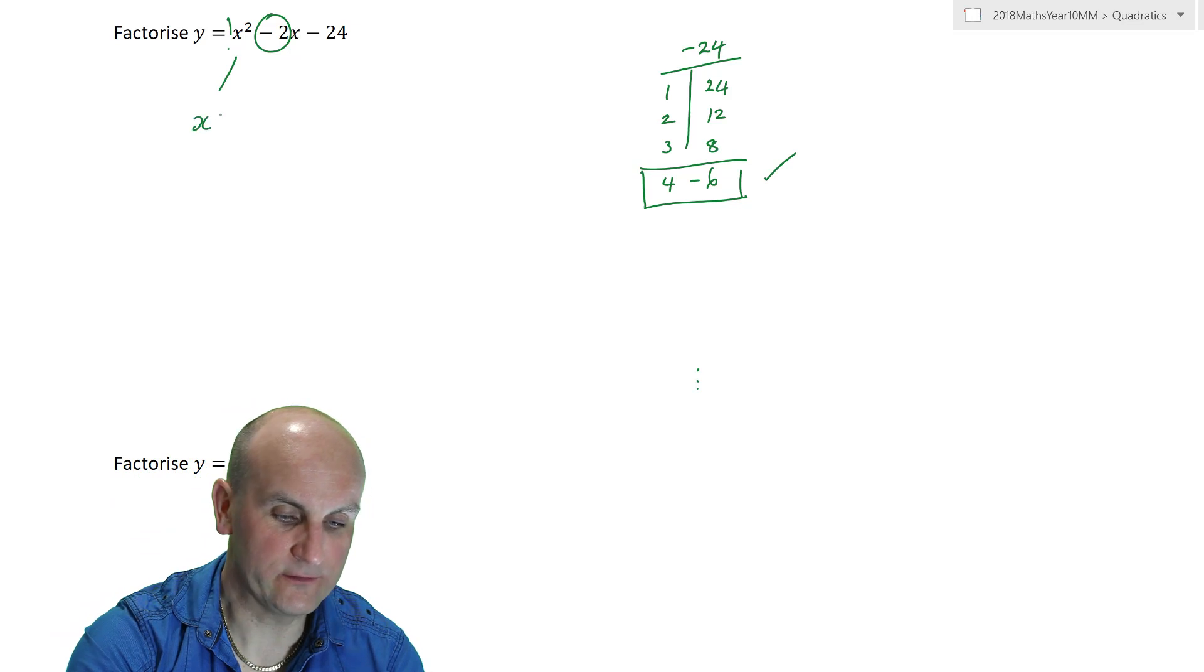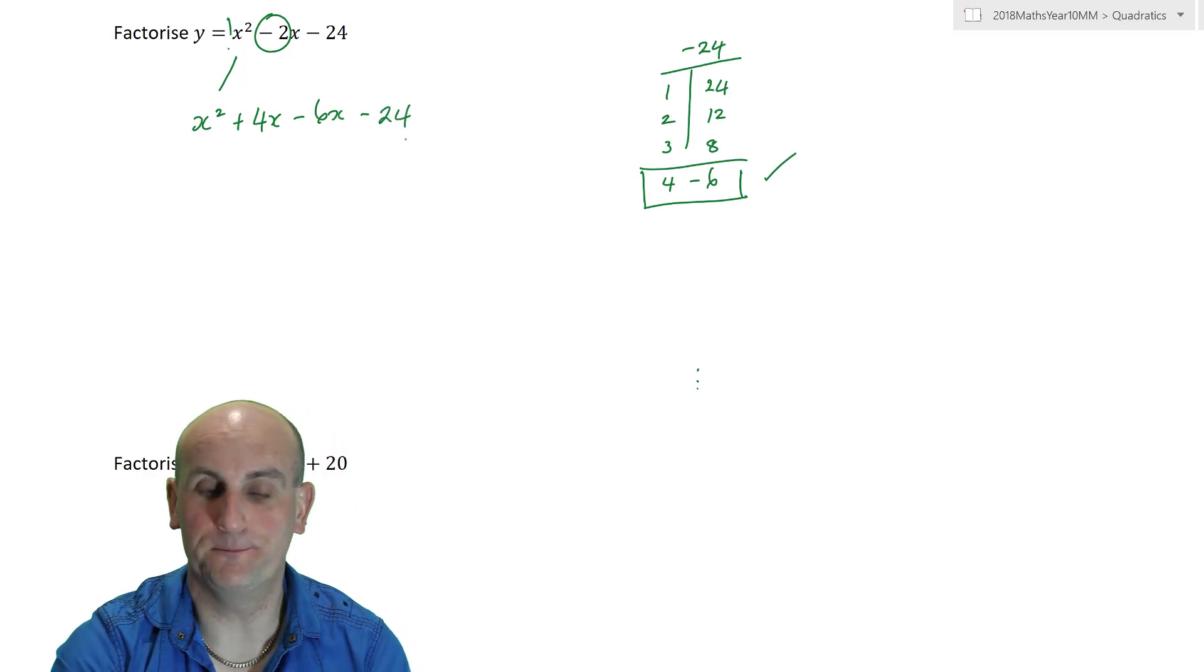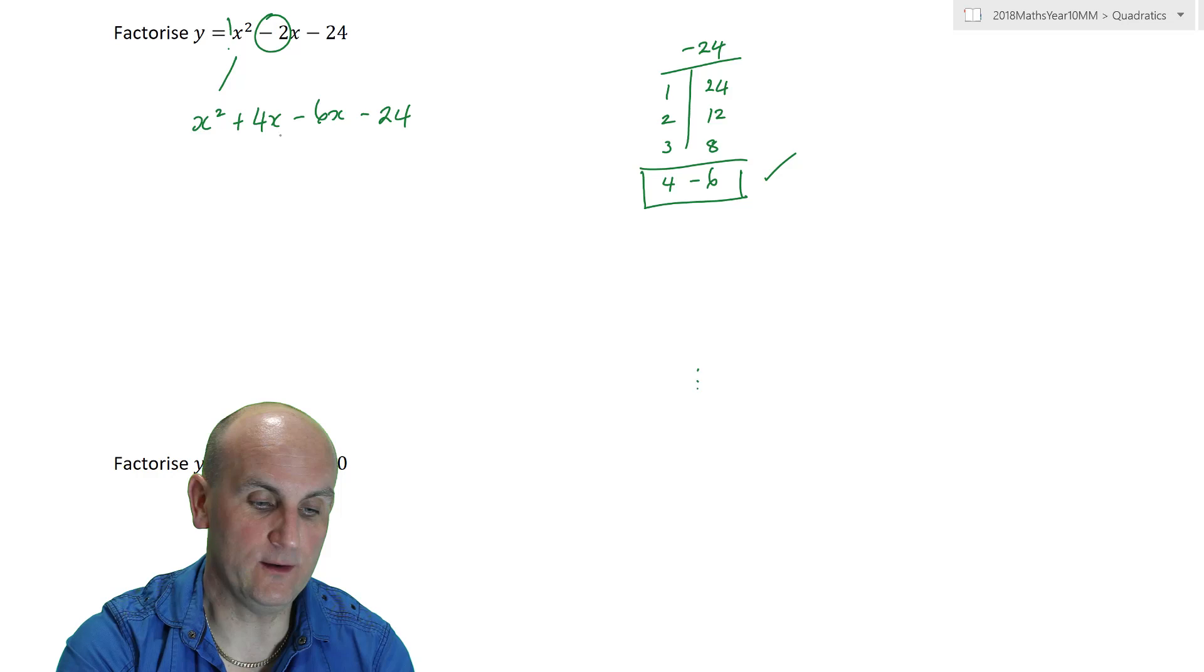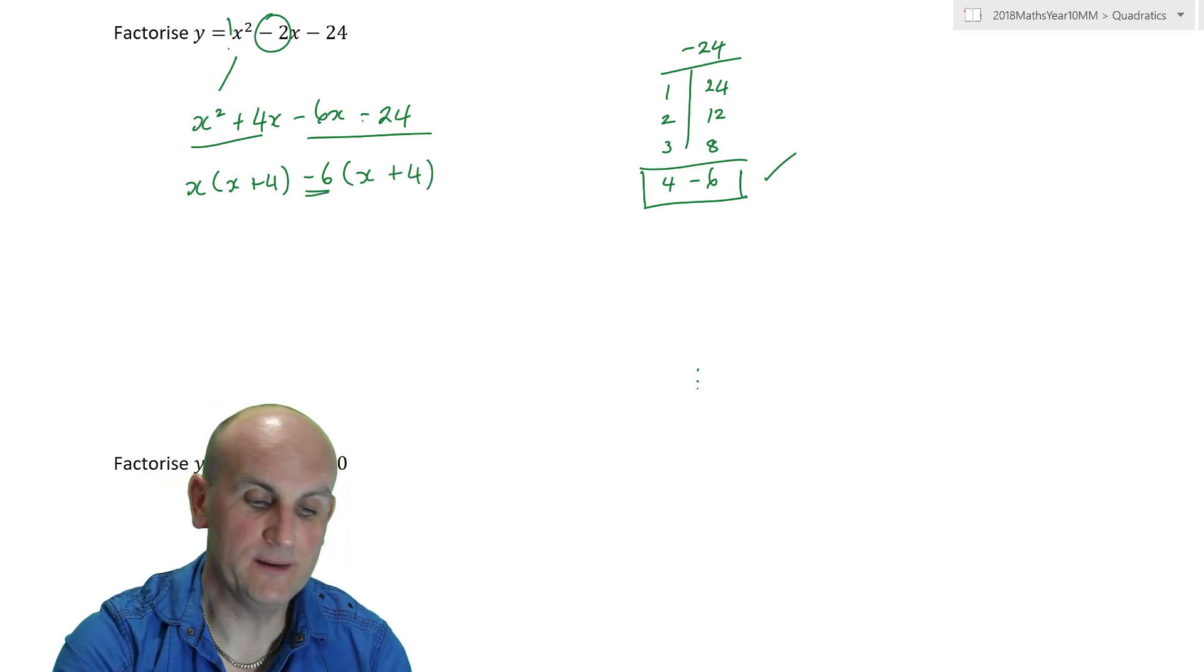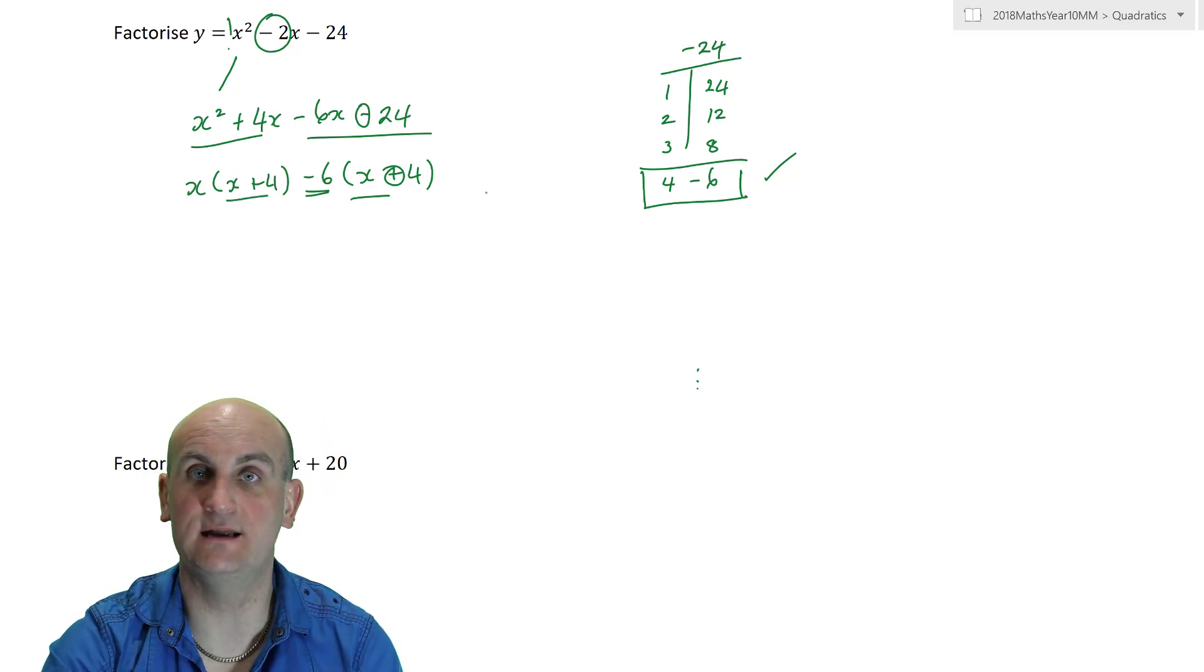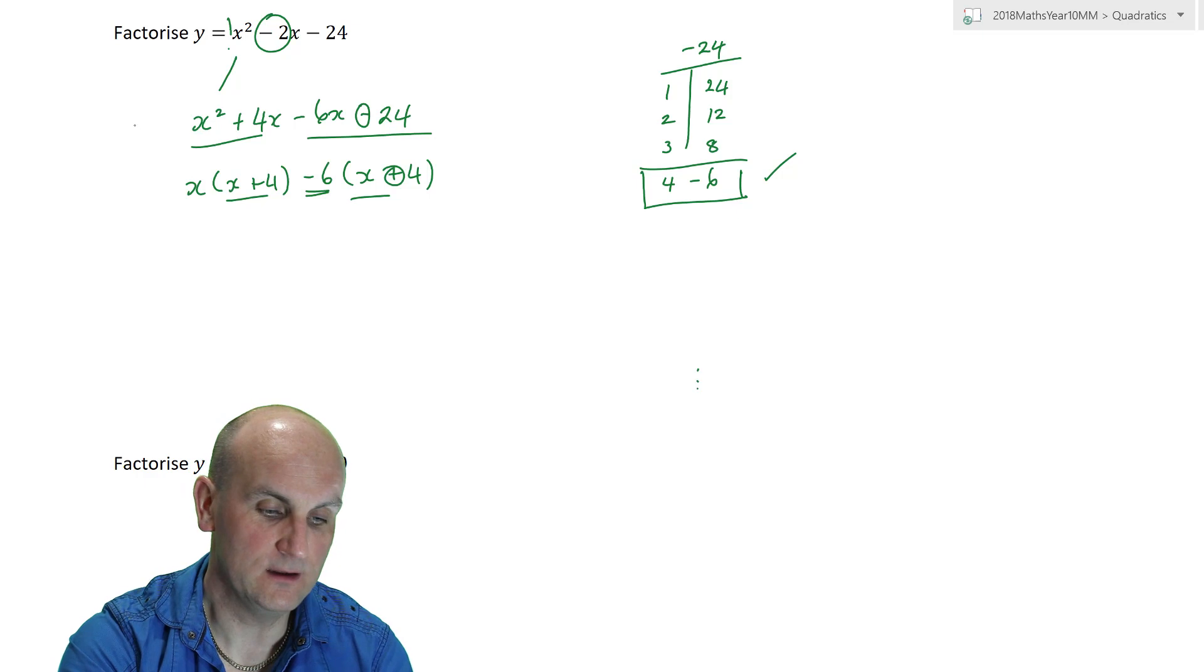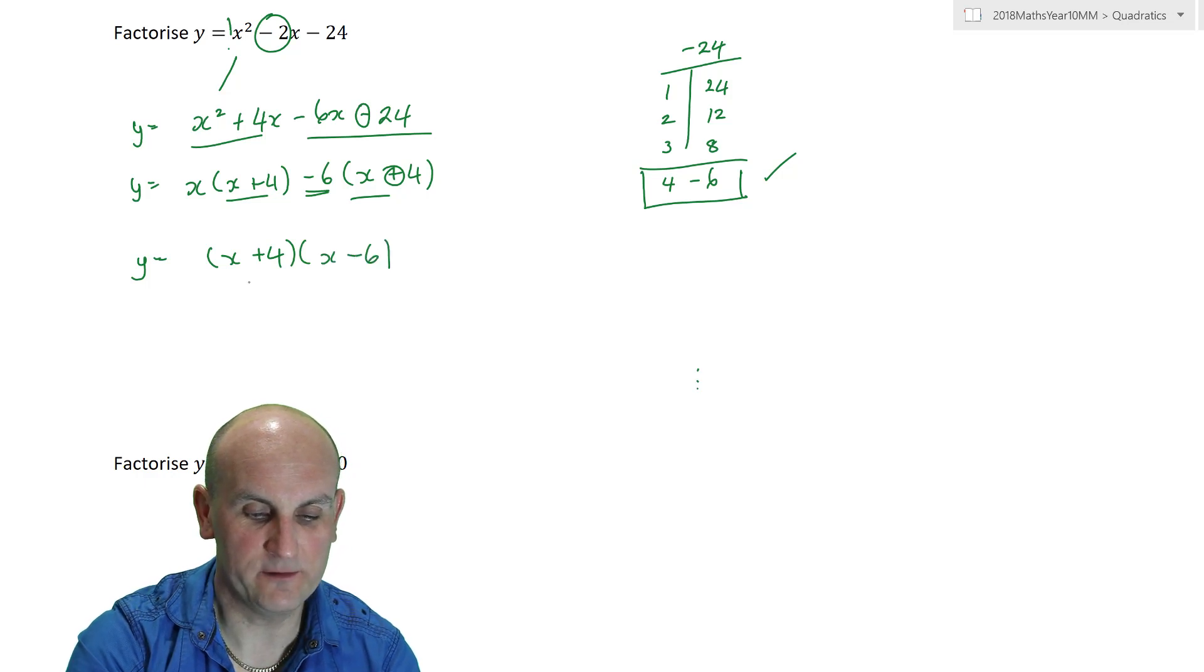So, x squared stays. Plus 4x. Minus 6x minus 24. That's good. So, now I can factorise by grouping. So, x, x plus 4, minus 6, x plus 4. Now, again, I've taken out the minus 6 there. Because, I need to turn this negative into a positive. So, that these two brackets are identical. They're identical. I have two terms, which have a like term in it. So, that becomes x plus 4 and x minus 6.